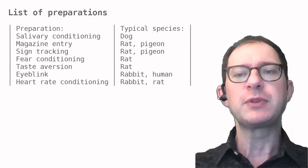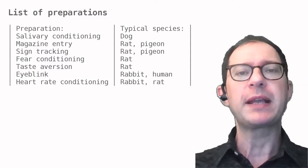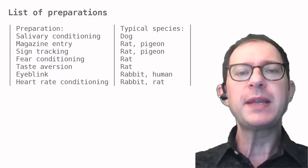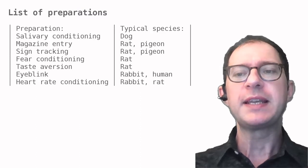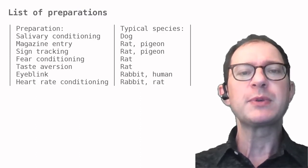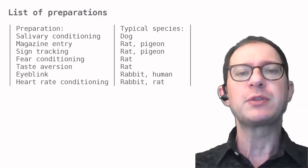If in future lessons you don't remember some details you can come back to this lesson. The typical species listed in the table is simply the animal that is used most often but other species can also be used.